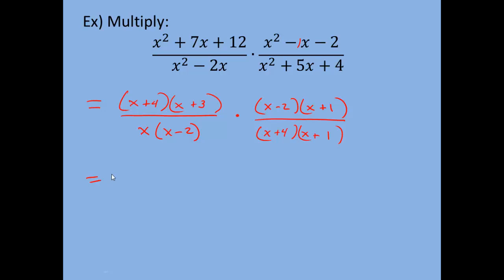Now we want to cancel — you can divide out any factors common in both the numerator and denominator, regardless of which fraction they appear in; as long as they're on different levels you can cancel them. x plus 4 in the numerator cancels with x plus 4 in the denominator. x plus 3 has no match in the denominator, so it stays. x minus 2 cancels with x minus 2, and x plus 1 cancels with x plus 1. When everything in a position cancels, there's really a 1 remaining.